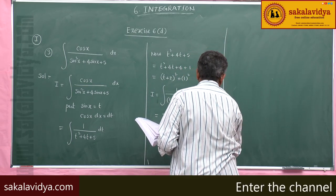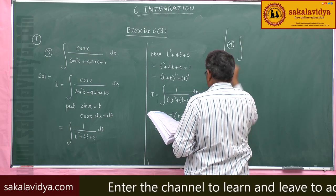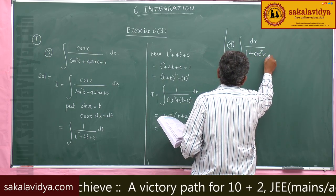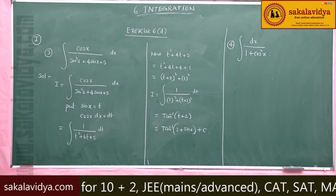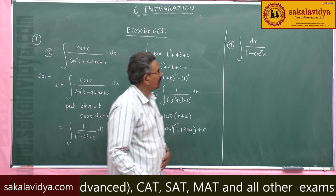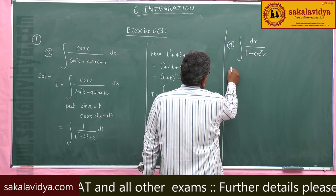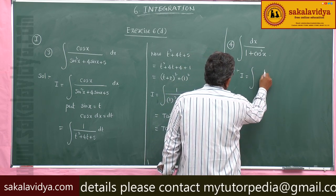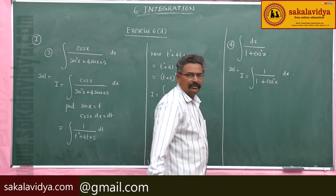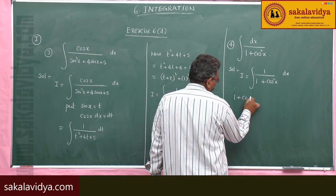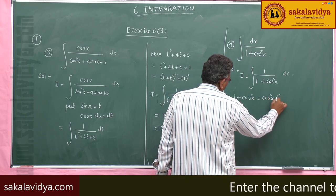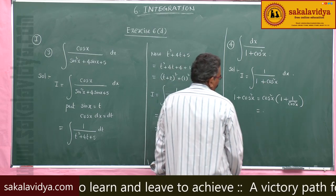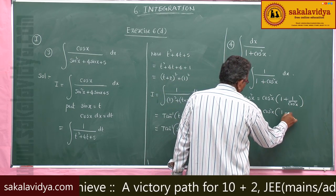Fourth problem: integral dx by 1 plus cos squared x. Let us do it. I equals to integral 1 by 1 plus cos squared x dx. This 1 plus cos squared x can be written — take cos squared x common — as cos squared x into 1 plus 1 by cos squared x, which is cos squared x into 1 plus secant squared x.